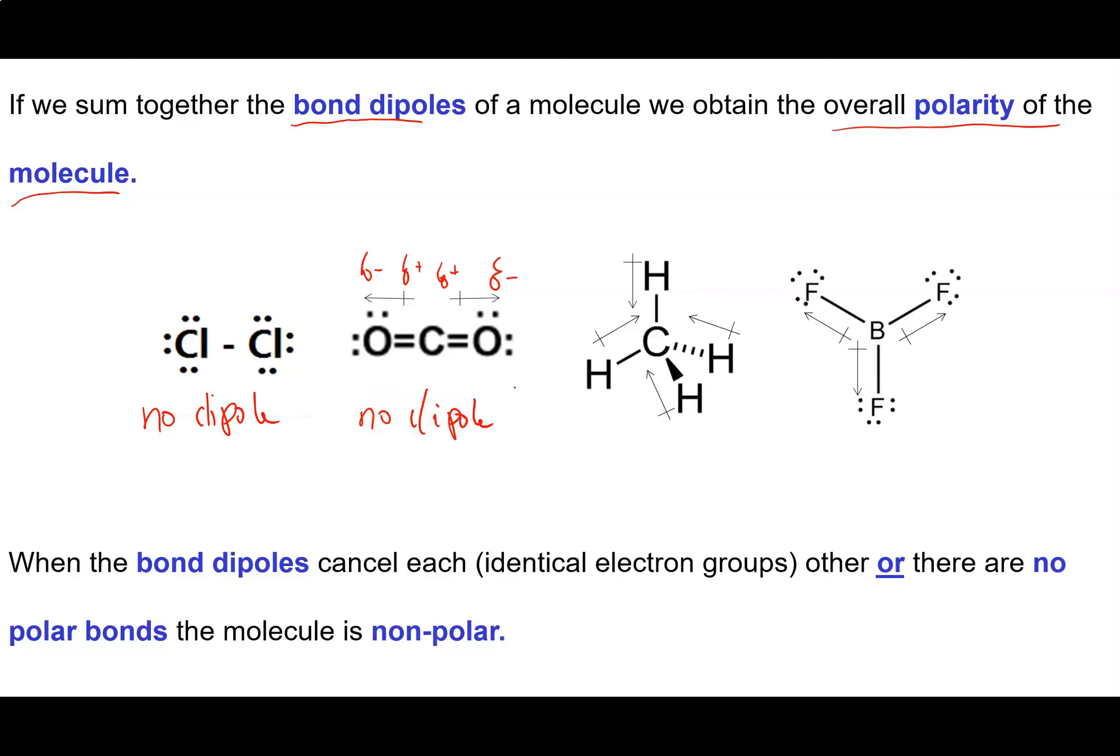Now, if I look at this methane molecule here, the hydrogen end of each of these carbon-hydrogen bonds will be a little bit positive. And the carbon end will be a little bit negative. And you can see there isn't an overall positive and negative end to this molecule. Again, we've got no dipole. It's kind of all over the place.